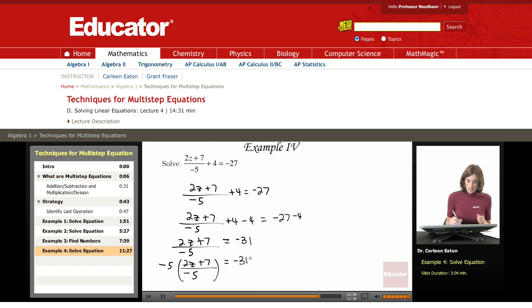And then the right side would be negative 31 times negative 5. Okay, continuing on here, the negative 5s cancel out. That leaves me with 2z plus 7 equals 155.